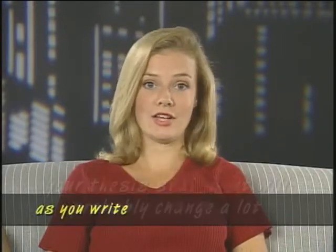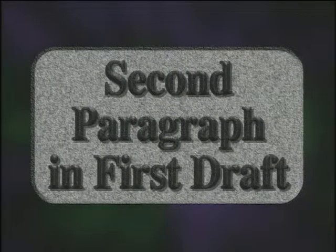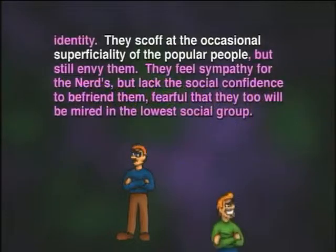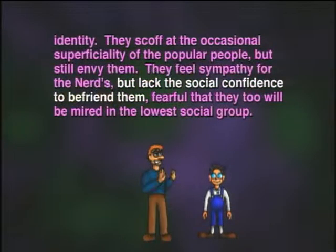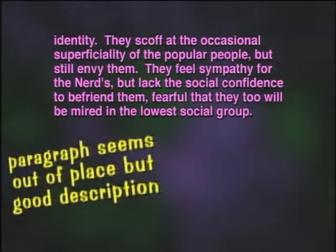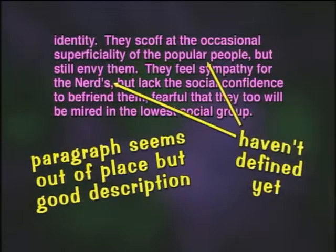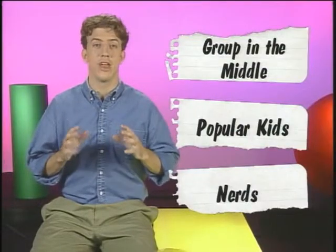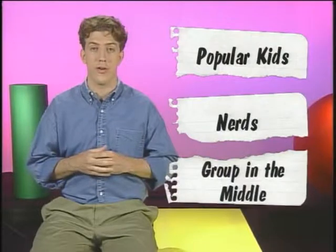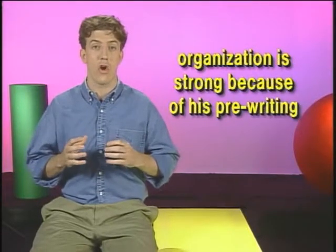We've said it before, and we'll say it again — your thesis statement will probably change a lot as you write and rewrite your paper. Let's go on to the second paragraph in his paper. The second paragraph of his first draft describes the group in the middle: they scoff at the occasional superficiality of the popular people but still envy them; they feel sympathy for the nerds but lack the social confidence to befriend them, fearful that they too will be mired in the lowest social group. Sam comments that she likes his description of this group but thinks it's in the wrong place, as Nathan's paper hasn't defined who the nerds or popular kids are yet. So Nathan decides he'll put this paragraph last after he's already defined the other two groups, but overall his organization is strong because of his pre-writing.